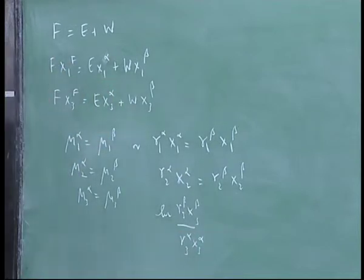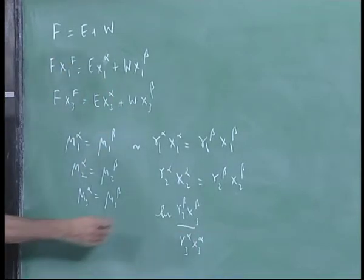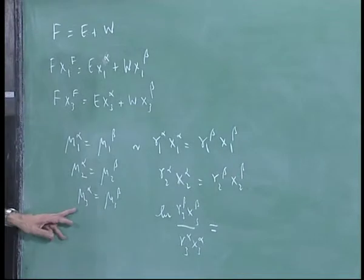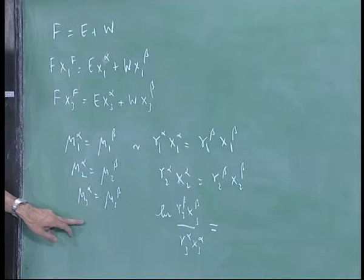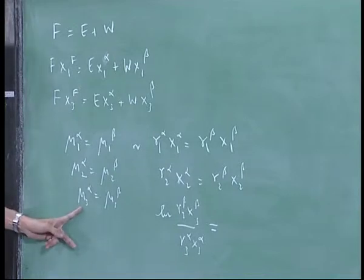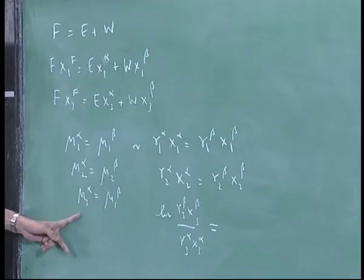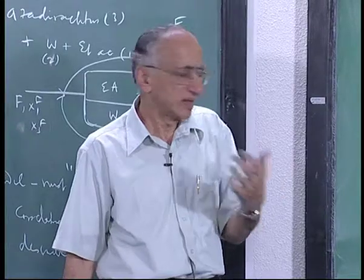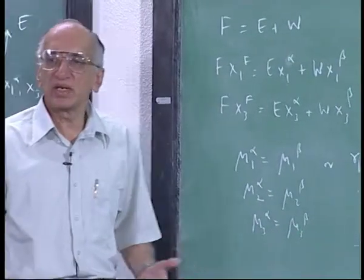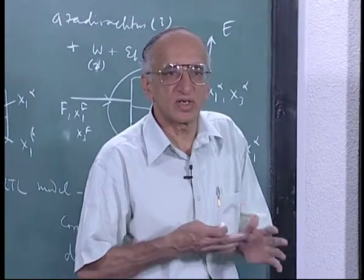Here we have a slightly different expression we had log of gamma 3 x3 beta by gamma 3 alpha x3 alpha. You remember we had this in terms of the heat of solution. This would be the difference in the heat of solution in the alpha phase in the beta phase because mu 3 would be mu 3 star plus rt ln gamma x and mu 3 star by t you will divide by t and differentiate with respect to t. So you will get minus h3 star where rt squared.